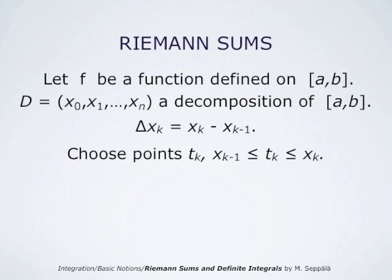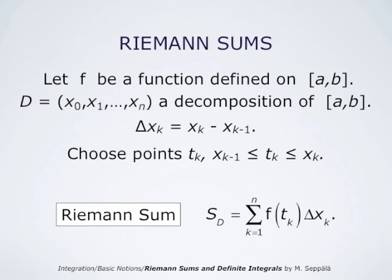We tag these subintervals by choosing points on them. On each subinterval from Xk minus 1 to Xk, we choose some point tk. It doesn't matter how we choose them; we may choose them freely. We simply choose on each subinterval one point tk. So then we get N subintervals and N points tk. These points tk tag these subintervals. Using these choices, we form the Riemann sum: capital S sub D, which is summation k from 1 to N of f evaluated at the tag point tk times the length of the subinterval Δxk.